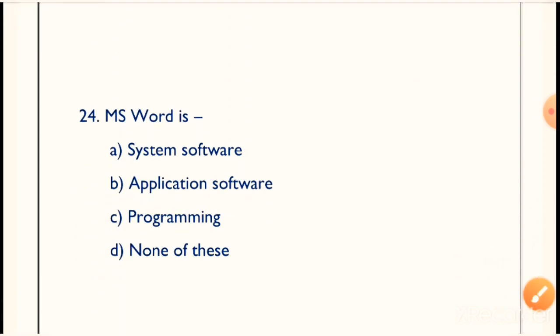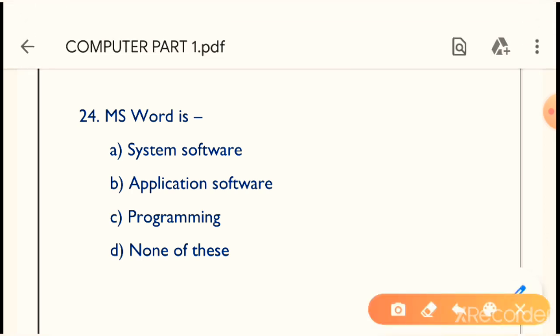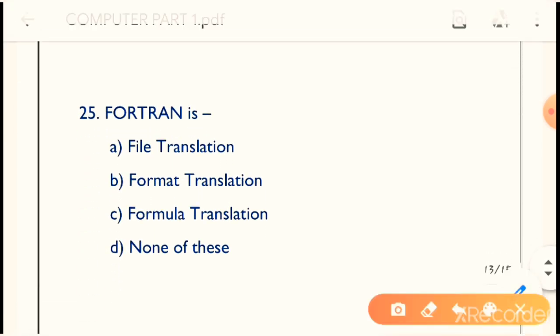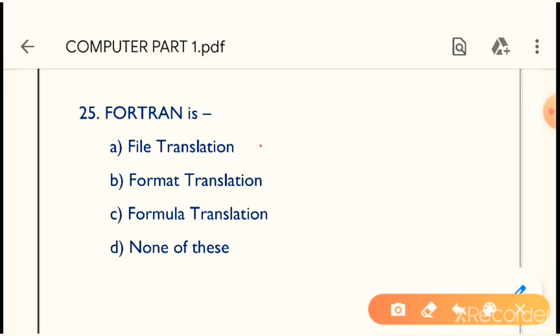Question 24: MS Word is what? The correct answer is Application Software. MS Word is a desktop application software.